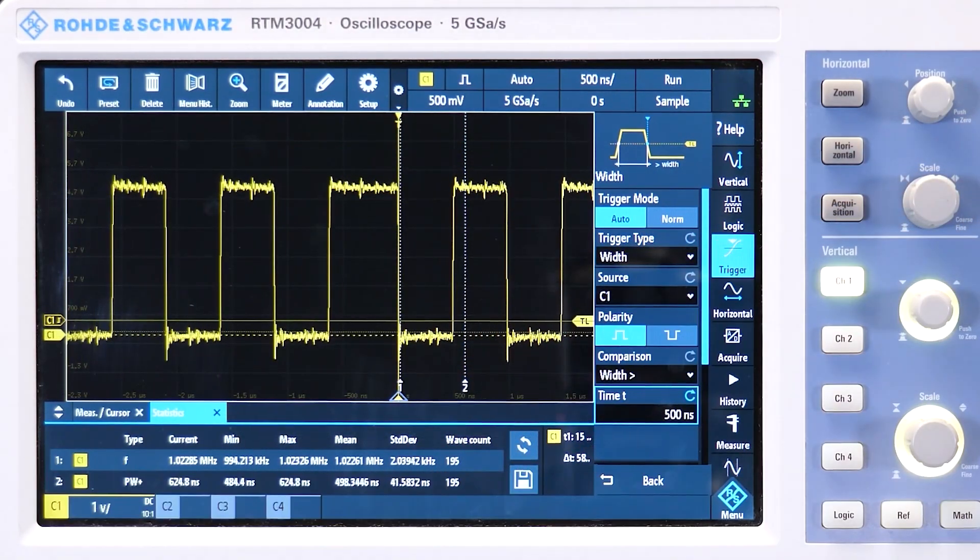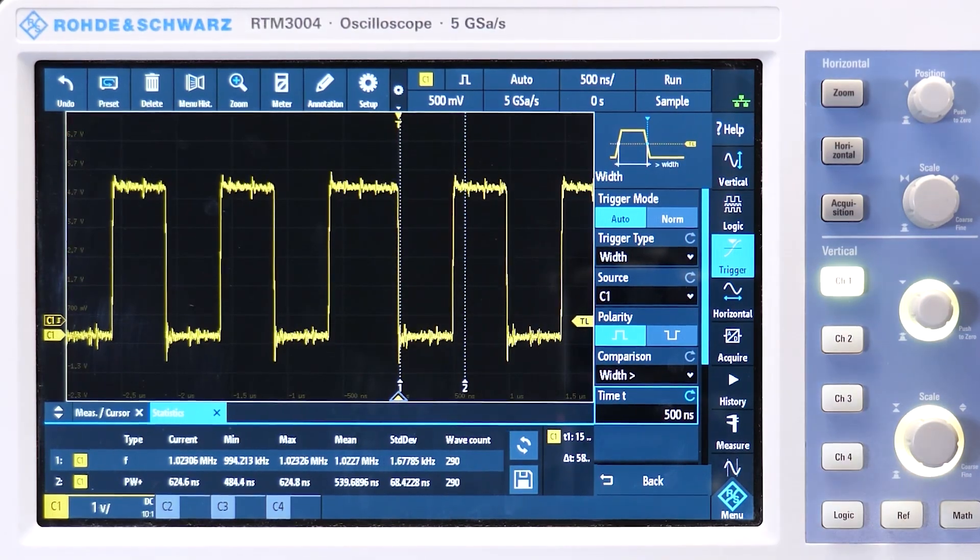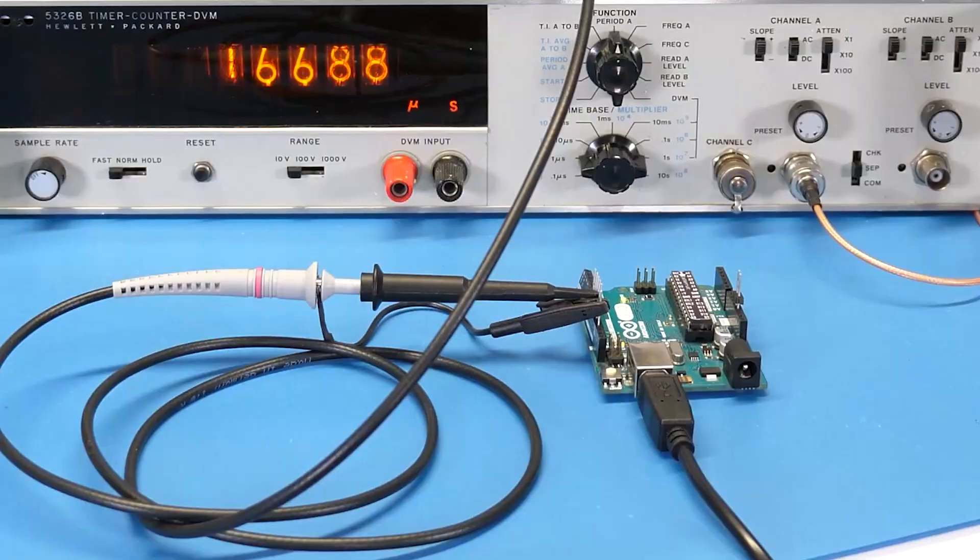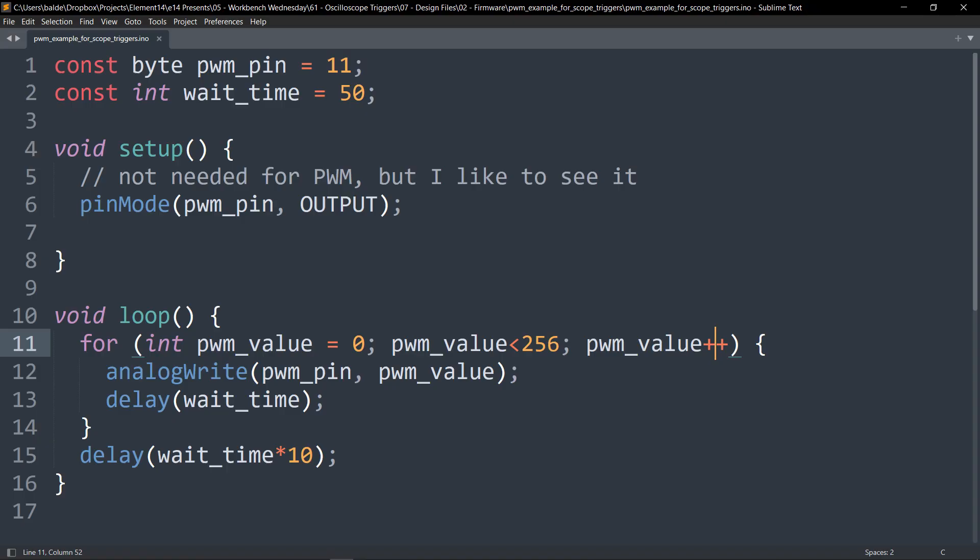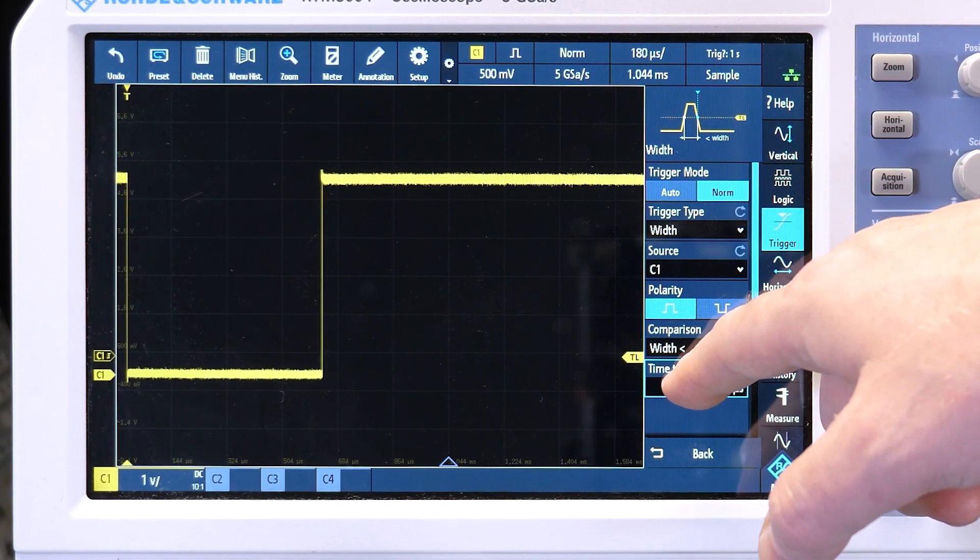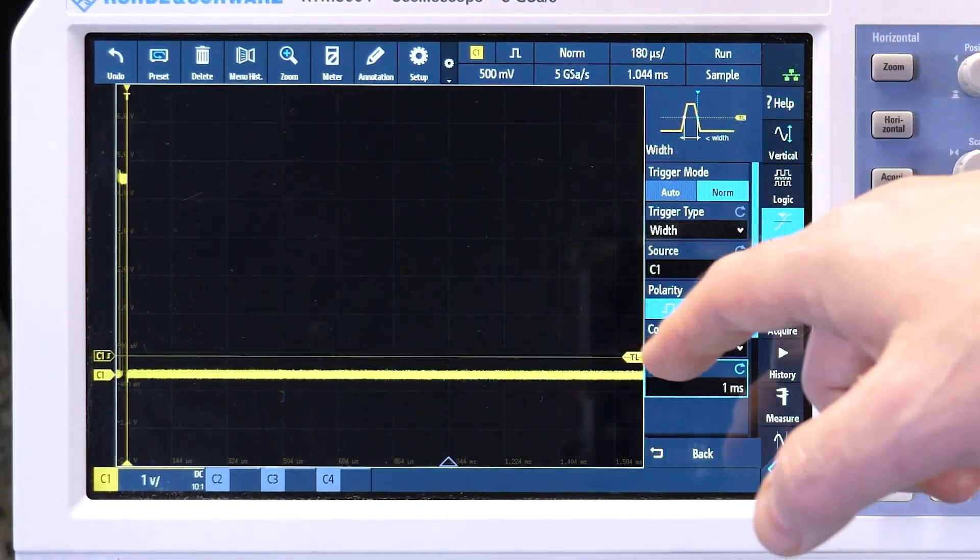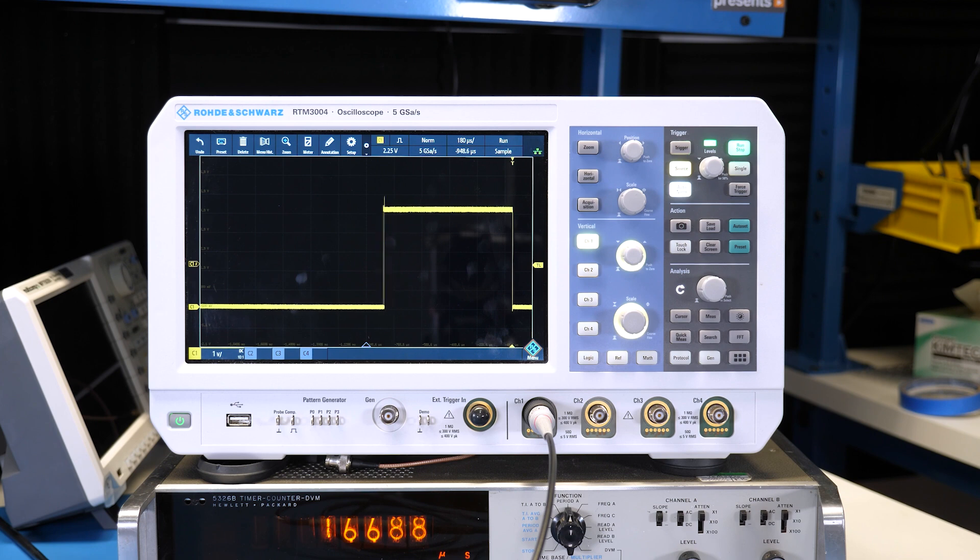Next I change the trigger type to pulse width, set for a positive pulse, and I want it to trigger when it is longer than 500 nanoseconds. And now the scope screen only updates when that trigger condition is met. Now, if you don't have a 40-year-old Apple ASIC to try out the same thing, you can use an Arduino instead. A really good way to play with this trigger is to use analog write in a loop like this one. It creates an expanding pulse width that you can use to test out different timeouts. Pulse width is also sometimes called glitch, but that's basically because it's a shortcut for the fastest width that a trigger can detect. And in general, the more expensive your scope, the smaller the pulse width it can catch.